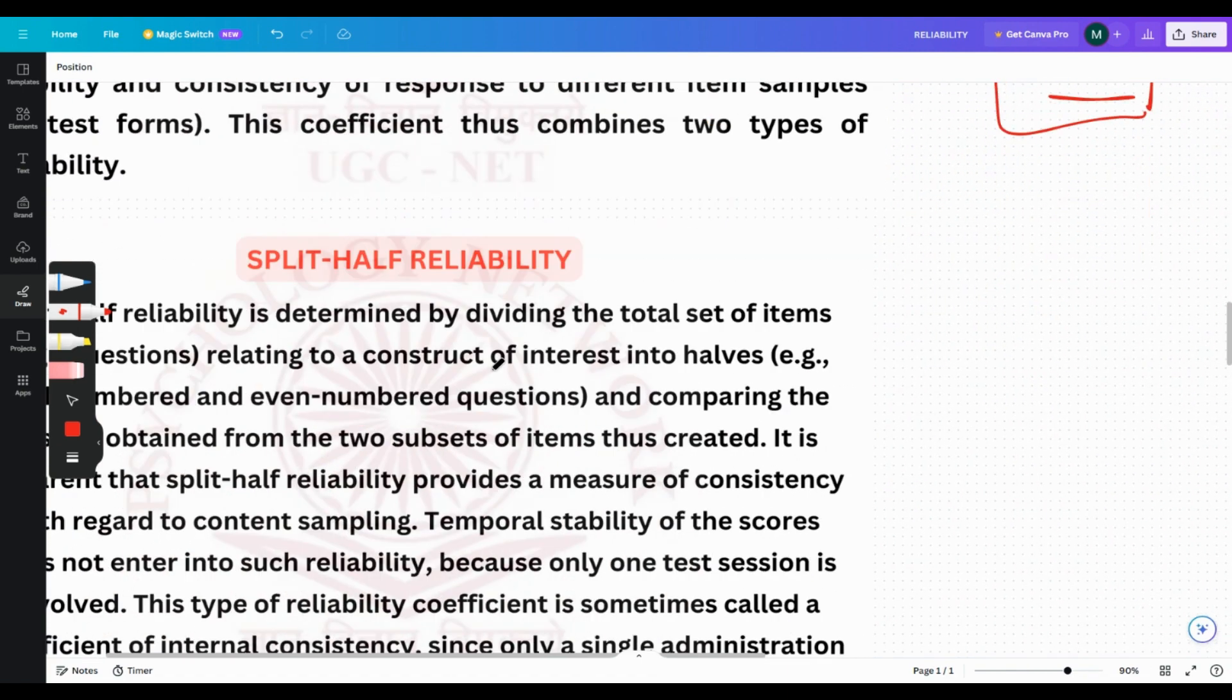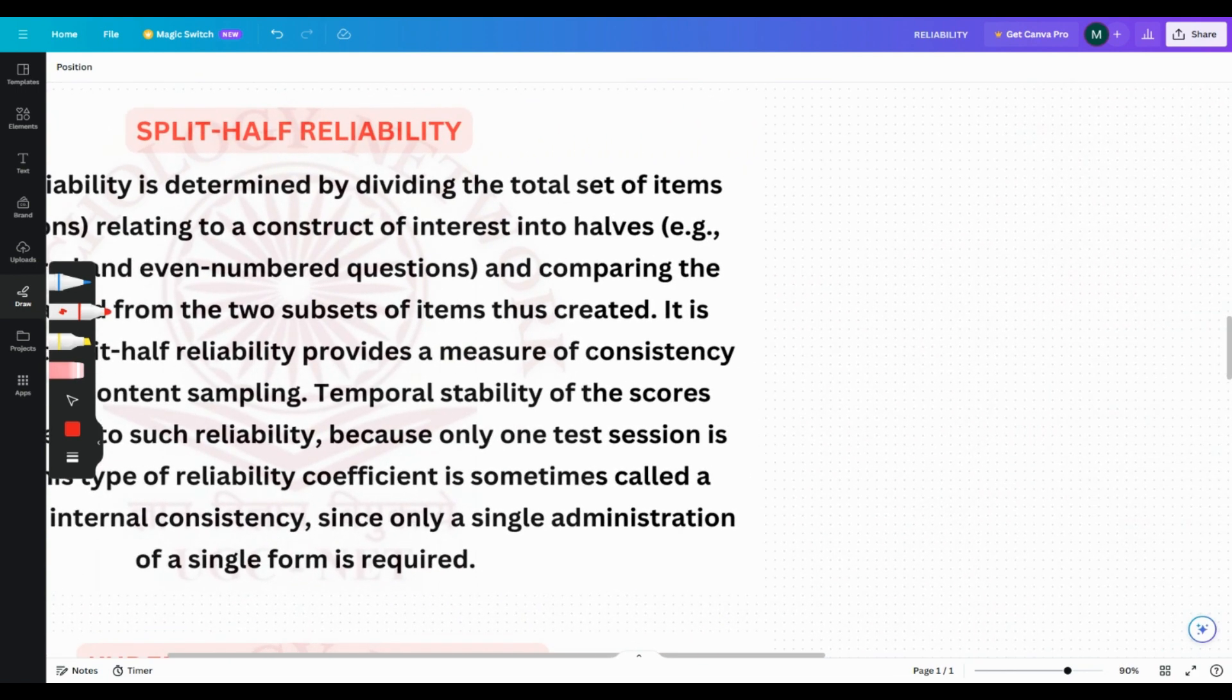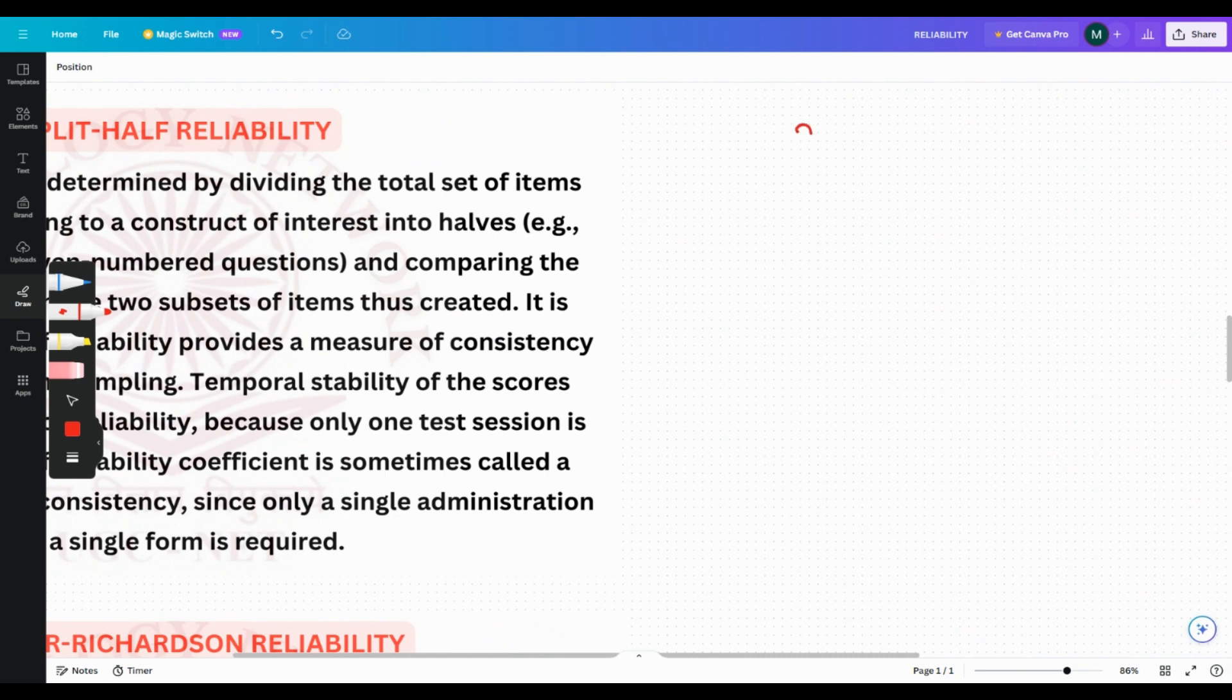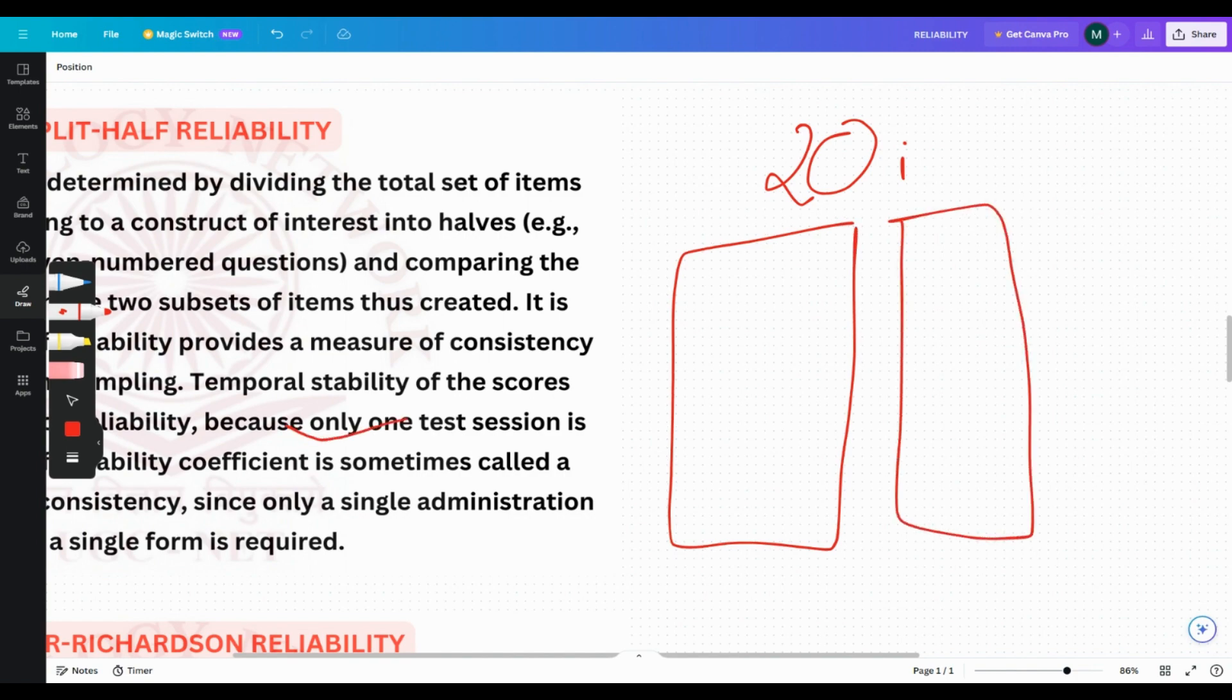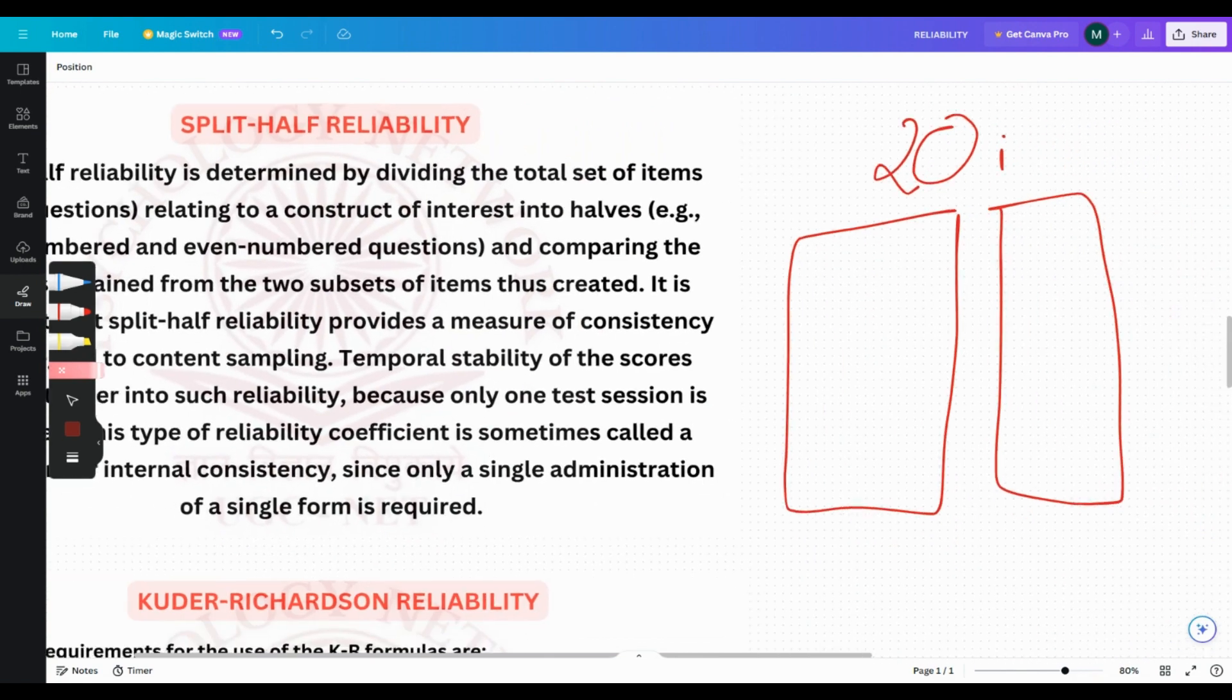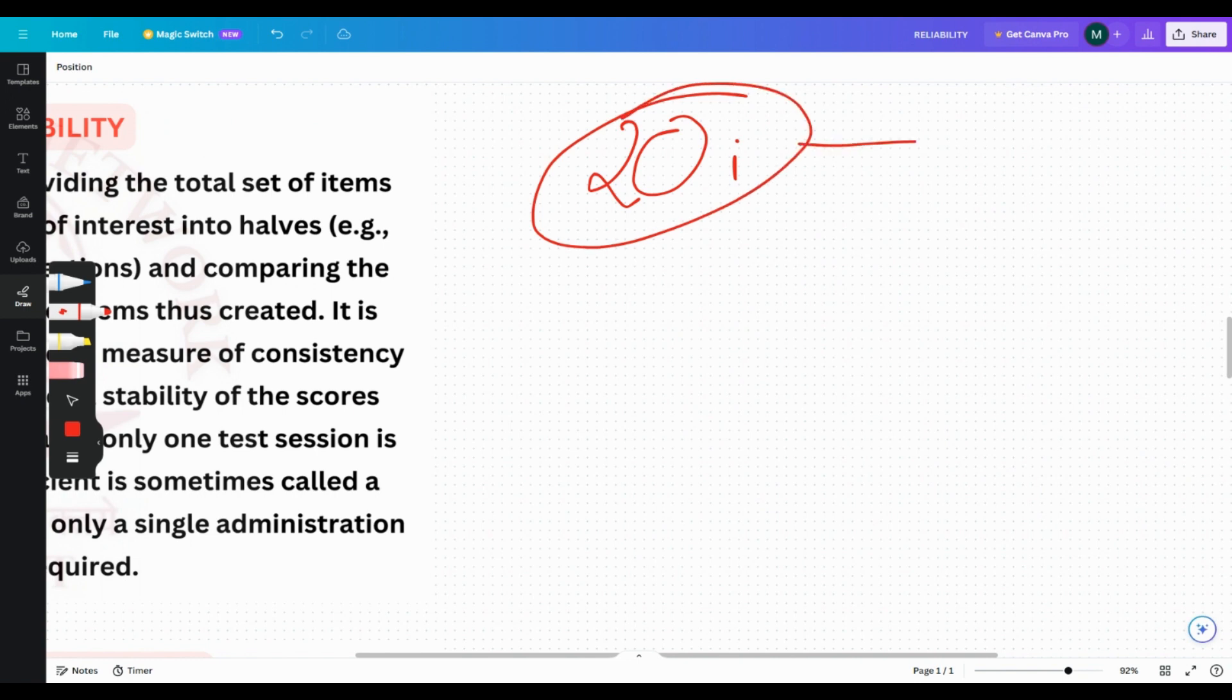Next, coming to split-half reliability. Split-half reliability is determined by dividing the total set of items into two halves, odd or even. Suppose there are 20 items, they are divided into odd and even halves. Then they compare the results obtained from two subsets of items. Split-half reliability provides a measure of consistency with regard to content sampling. In split-half technique, you need one test, and it's divided into two parts, odd and even.